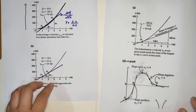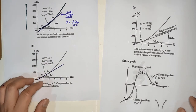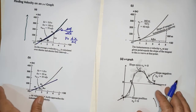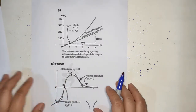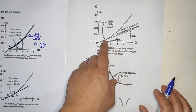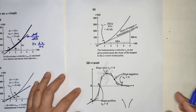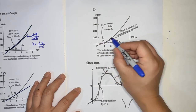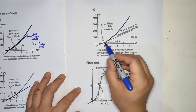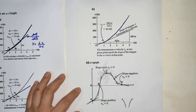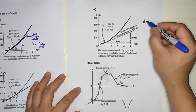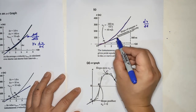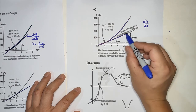The average velocity changes with respect to time or with respect to the two points chosen. Now let's go to instantaneous velocity. From differential calculus, you can find the tangent line at a point, and that is dx/dt. The slope of the tangent line is the instantaneous velocity.